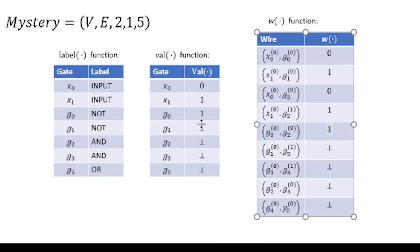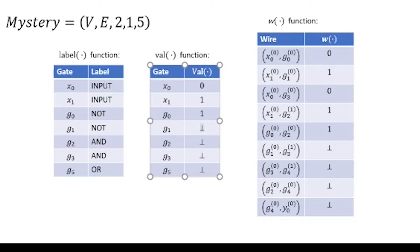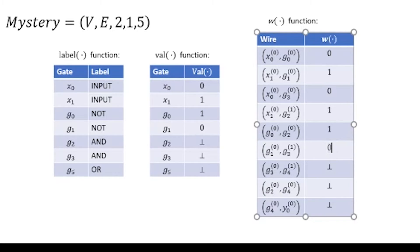Now let's see if we can find any more gate values. g1 is only receiving one input, and that's a 1. Looking up the label for g1, that's NOT, so we do NOT 1, giving us 0. We update the w function so that everything starting with g1 is now known — that edge becomes 0.